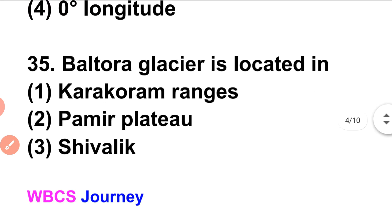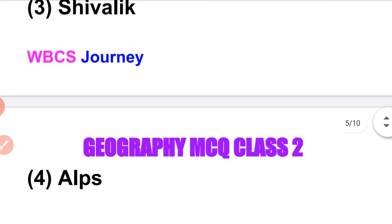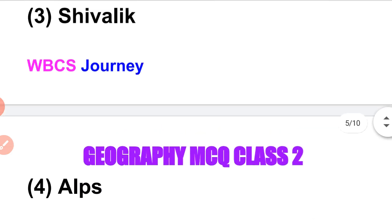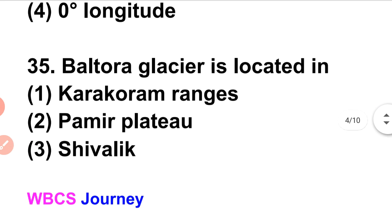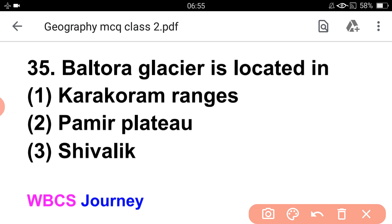Baltora glacier — where is this glacier located? The options are: Pamir Plateau, Shivalik, or the Alps. Baltora glacier is located in the Karakoram range.